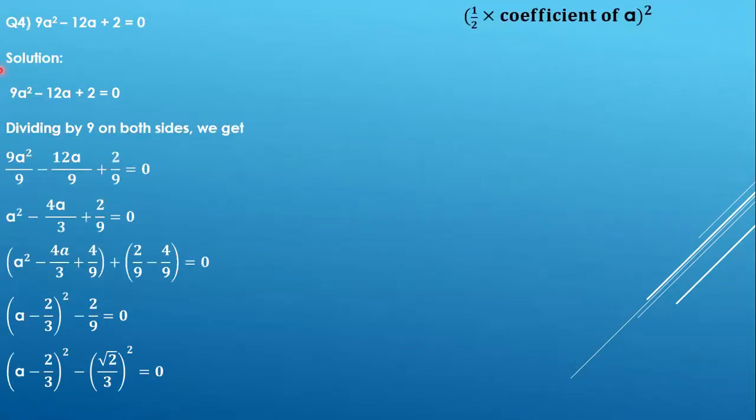The fourth question is 9a² - 12a + 2 = 0. In our previous videos we've seen that the coefficient of a² should be 1, but in this question the coefficient of a² is not 1.